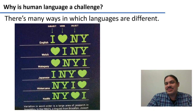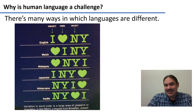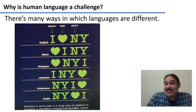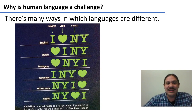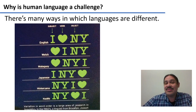Beyond those superficial differences, there are differences in the way languages configure their words. For example, in English, a sentence like 'I love New York' is what we would normally say. However, other languages have other orders. In Japanese, the correct way to say the sentence would be 'I, New York, love.' In other languages like Welsh, the verb would go first and the correct sentence would be 'love I, New York.' In languages like Ixcariana from Brazil, the correct order would be 'New York I love.'